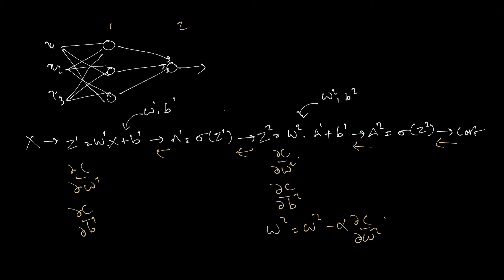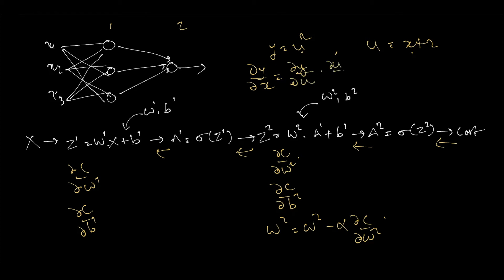This is where the chain rule comes in. The chain rule says: if y = u², where u depends on x and u = x + 2, then the derivative ∂y/∂x can be written as (∂y/∂u) * (∂u/∂x), since y is not directly dependent on x. This chain links through to give us ∂y/∂x. Let's apply this rule to our problem. Starting from layer 2, which is the output layer — the output a2 is my predicted value y-bar, but I'll call it a2 for consistency.